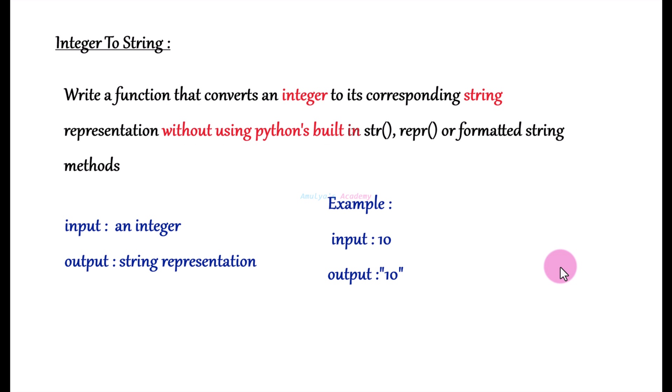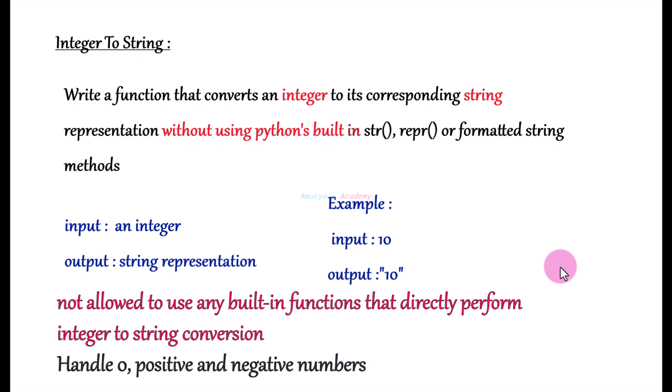Hello and welcome back to Amulya's Academy YouTube channel. Today we are going to solve a coding problem called integer to string. Here is the problem statement: write a function that converts an integer to its corresponding string representation without using Python built-ins. The input is an integer number and the output is its string representation — for example, if input is integer 10, output is string 10. The function must handle positive numbers, negative numbers, and 0.